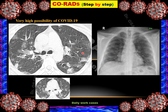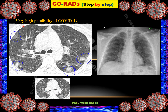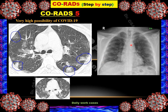Case 1: HRCT showing multifocal areas of ground glass opacity — bilateral and based on the pleural surface, with peripheral distribution. All three criteria are met, so it is classified as CO-RADS 5, meaning very high possibility of COVID-19. On the frontal chest radiograph, there is subtle peripheral opacity that cannot be confidently diagnosed on X-ray. RT-PCR test was positive for this patient.